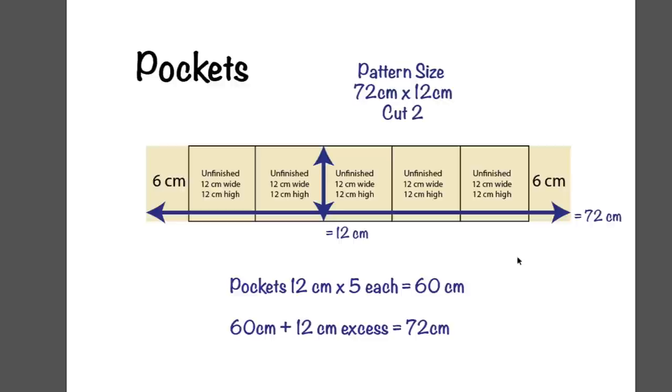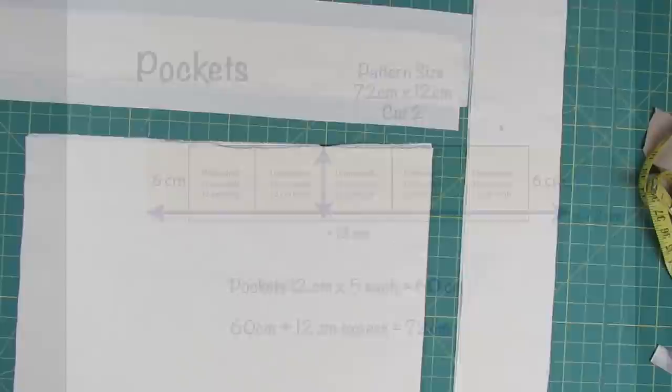To determine the piece of fabric size that we need, we've got 5 pockets that are 12 cm each, which is 60, and 60 plus the excess 12 is 72 cm. So if you took a calculator and started at the left and did 6, 12, 12, 12, 5 times and 6, it would equal the 72. And we know that the height unfinished is 12 cm. So we need a piece of fabric that is 72 cm wide by 12 cm high, and we are making 2 rows of pockets, so we need to cut 2 pieces.